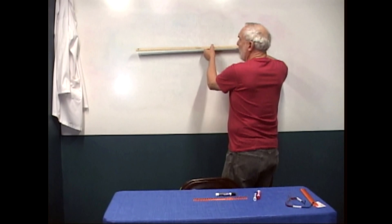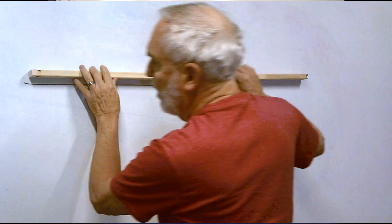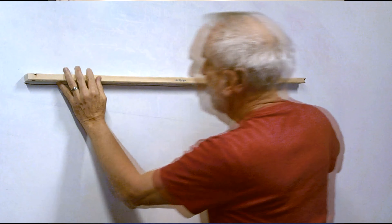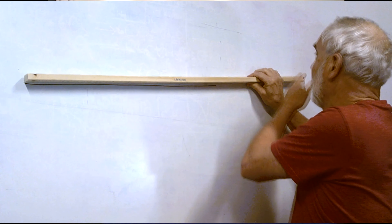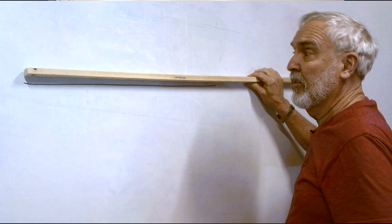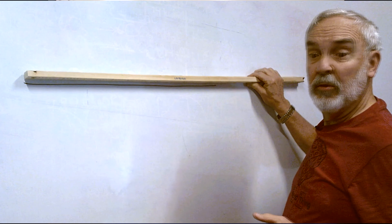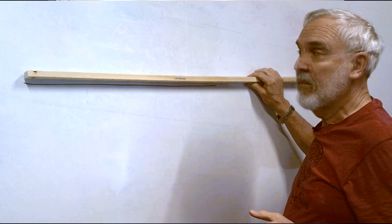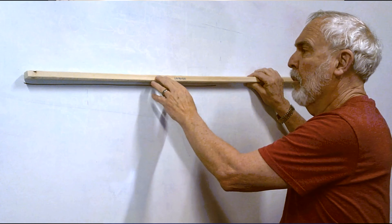I put the meter stick right up here edge to edge and I see it's less than a meter. There's my meter mark, so I can't say it's a meter. If I did, someone would say, well is it exactly a meter? Is it a little more than a meter? And obviously the answer is it's a little less. So the first thing we do when we measure something is take our basic unit and we divide it.